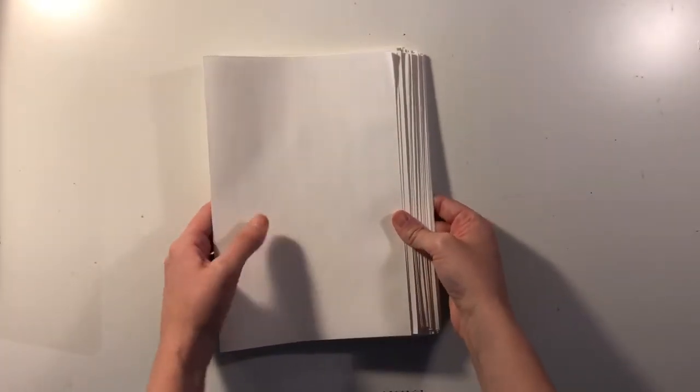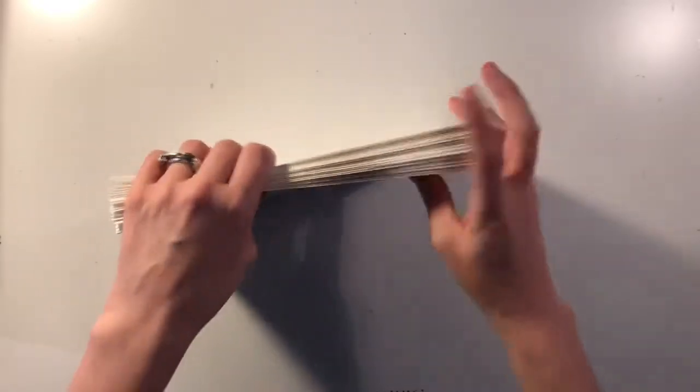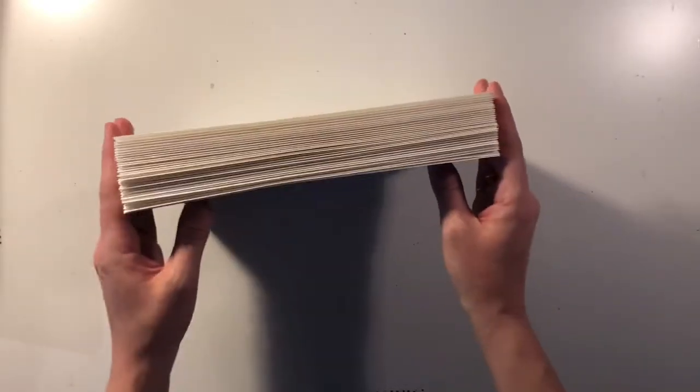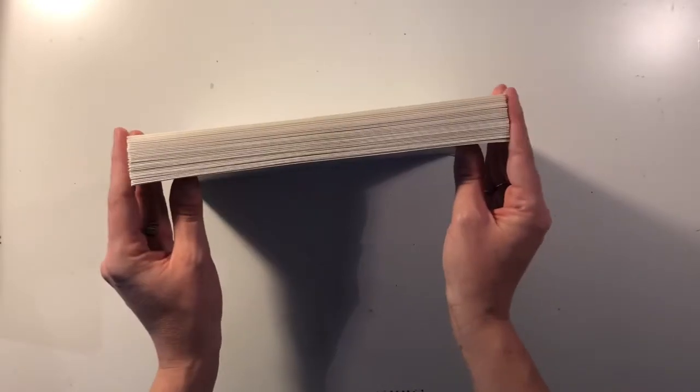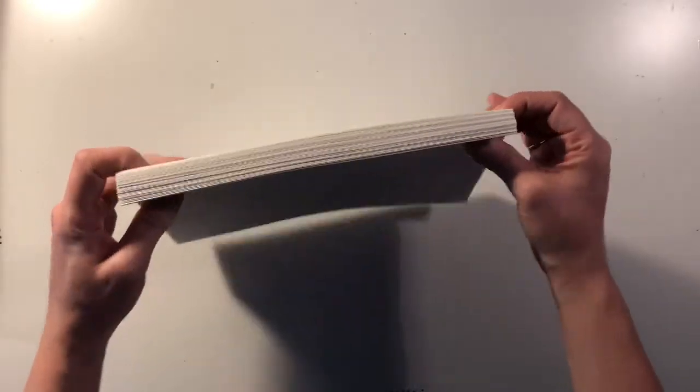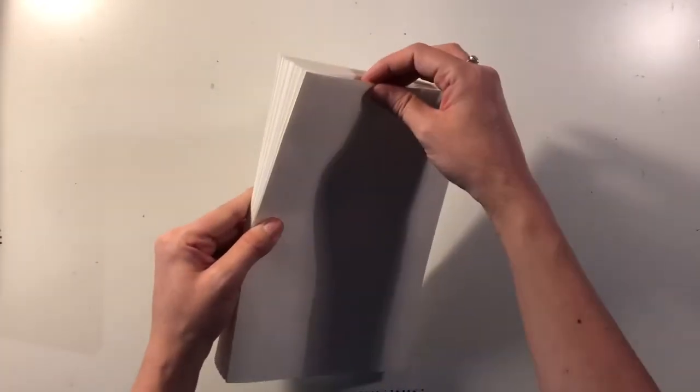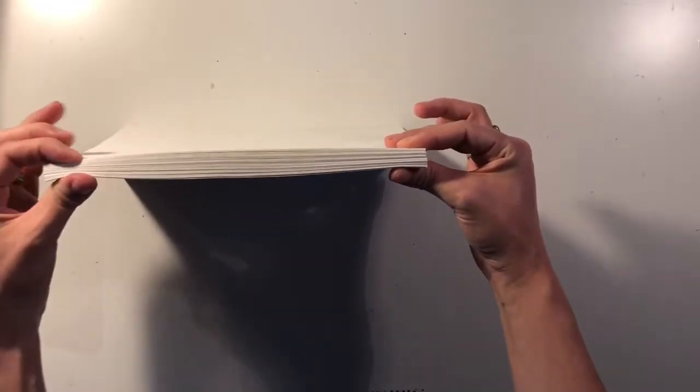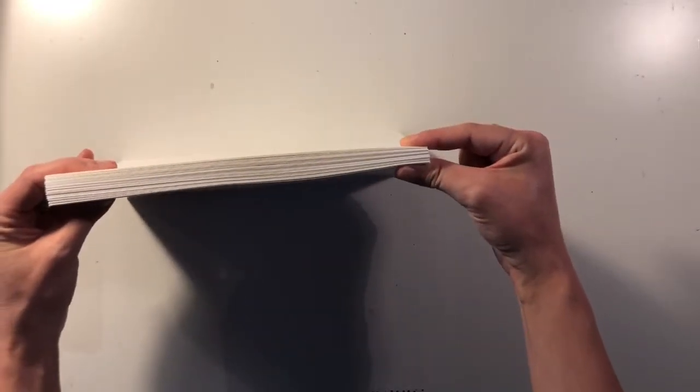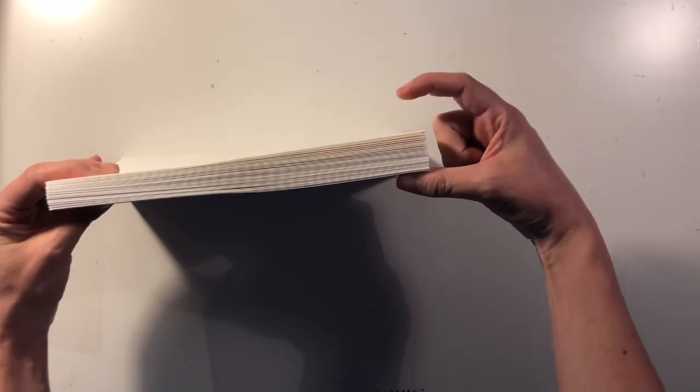Okay, so once you have your 30 pages torn out, you should have a nice stack and you can neatly stack them together. Give them a little tap and see what they look like. Now for this example I'm using very thin sketching paper, so you can see the difference in how thin this paper is versus if you're using the mixed media paper—you're going to have a much thicker stack of pages like this.